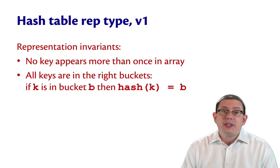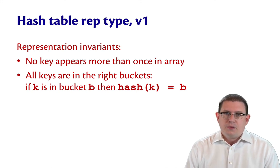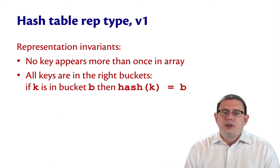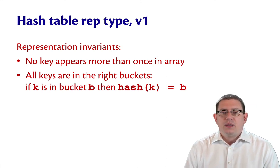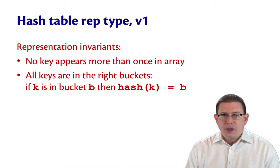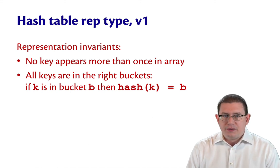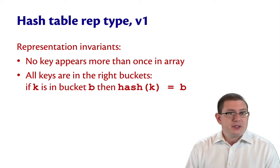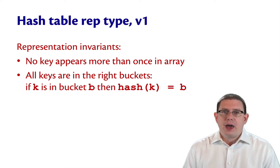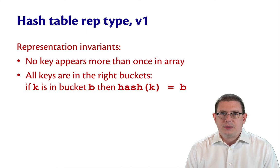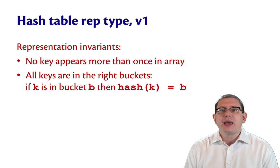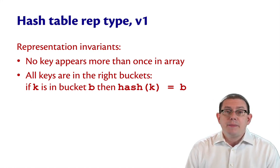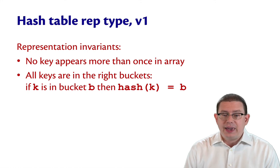We need some representation invariants for this type. First off, I'm going to enforce the invariant that no key appears more than once in an array. In other words, I'm not going to ever allow a duplicate binding of the same key. Not in the same bucket, not even in other buckets. So every key can appear at most once. The second representation invariant I'll enforce is that all keys have to be in the right bucket. So if key k is in bucket b, then it must be the case that the hash of k is b.